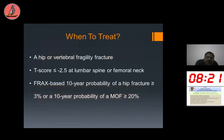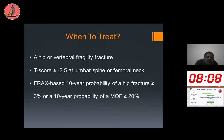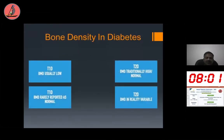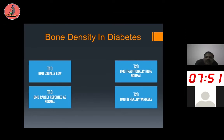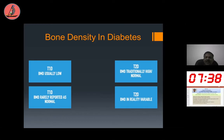When to treat: any person with hip or vertebral fragility fracture has an indication for treatment. A T-score less than minus 2.5 at lumbar spine or femoral neck is also an indication. If FRAX-based 10-year probability of fracture meets the FRAX criteria, treatment is also indicated. In type 1 diabetes, BMD is usually low, while western literature suggests BMD is high in type 2 diabetes, though our multiple studies found BMD is low in Indian type 2 diabetics. BMD is rarely reported as normal in type 1 diabetes, while in type 2 diabetes BMD is variable across studies.